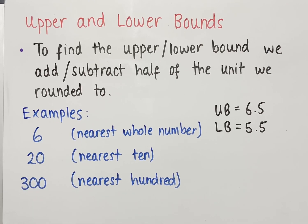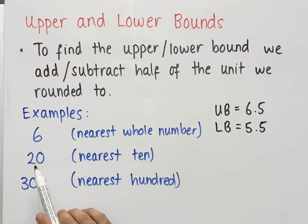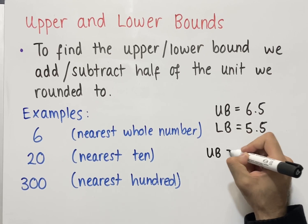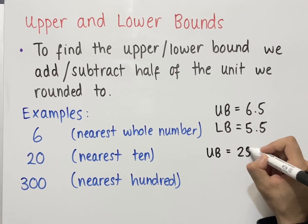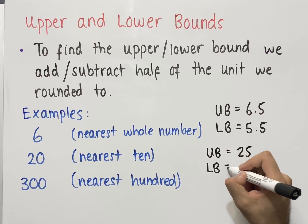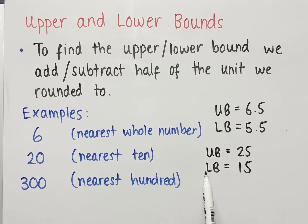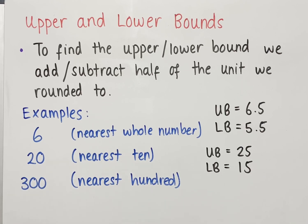The second example is 20, where a number rounded to the nearest 10 equals 20. Since we're going up in 10s, our unit is 10. Half of 10 is 5, so we add and subtract 5 from 20. The upper bound is 20 + 5 = 25, and the lower bound is 20 − 5 = 15. So 15 is the smallest possible number that rounds to 20 to the nearest 10, and all numbers less than 25 round to 20 to the nearest 10.